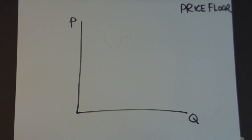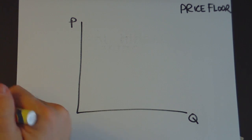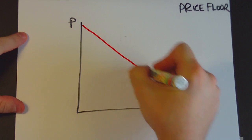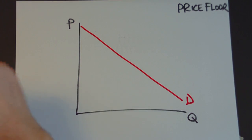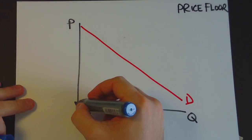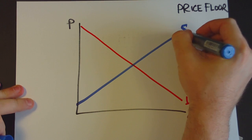Okay, let's now talk about the situation of a price floor. So we've got a downward sloping demand curve here, upward sloping supply curve I should say, here.